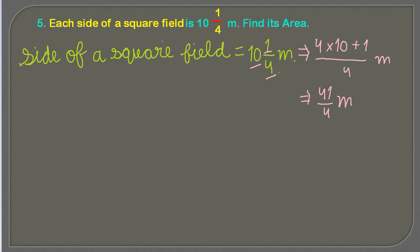So now we have written the side of a square field. Now we are going to find its area, that is area of a square field.